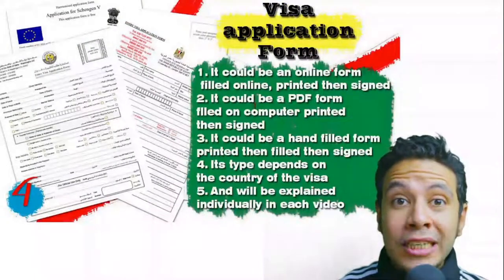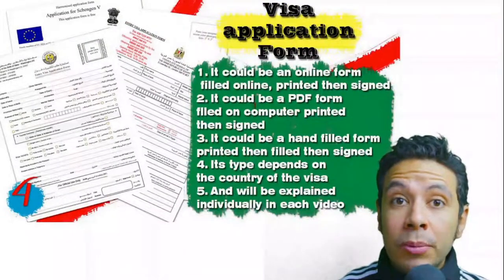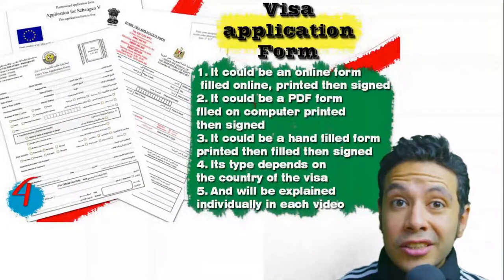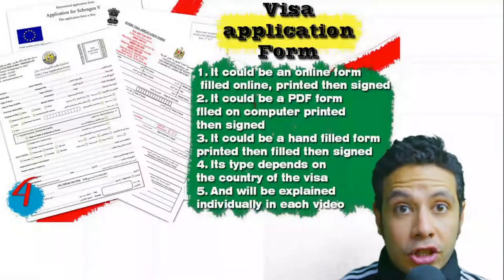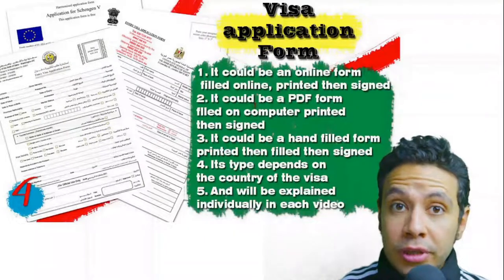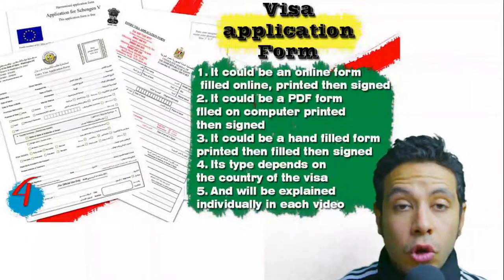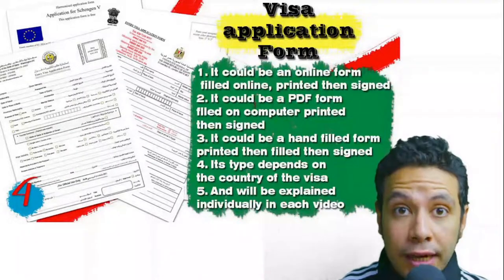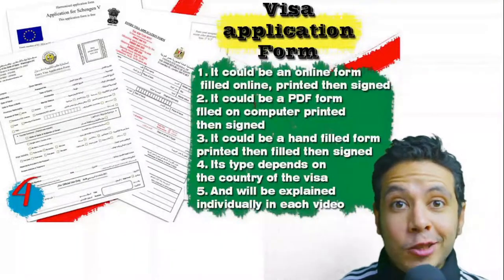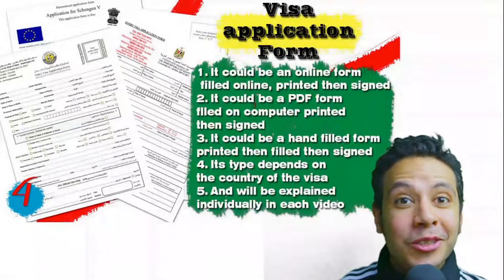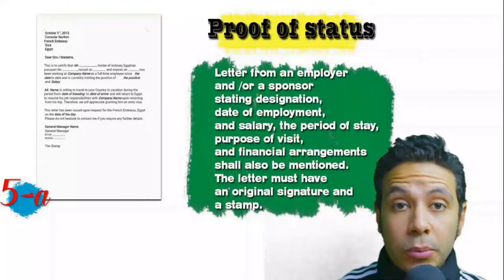For the visa application form, in general you need only one copy, but sometimes two or even three copies are required. Visa forms differ from country to country — generally you print and fill it manually, but many countries now provide an online platform where you can fill the form online and then print and sign it. For this form, you just fill it as shown in the video.